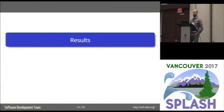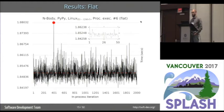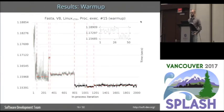Now we're going to look at results in two phases: first some plots, then some numbers. Let's start with things that behaved as we might expect. Many process executions were classified as flat — you can see the classification in the top right-hand corner of each plot. This is fairly uninteresting; there's just one segment and one outlier — absolutely fine. The next classification we saw was warm-up. This is fasta running on V8 on a Linux machine. Although there is a very long warm-up phase of about 800 iterations, the process execution does warm up, and that's absolutely fine.